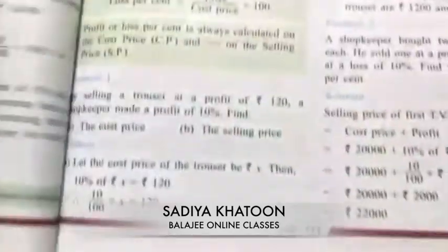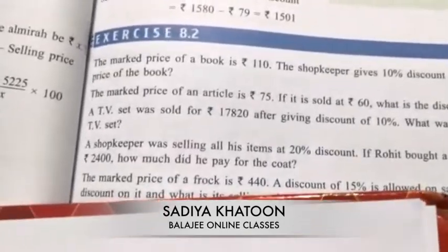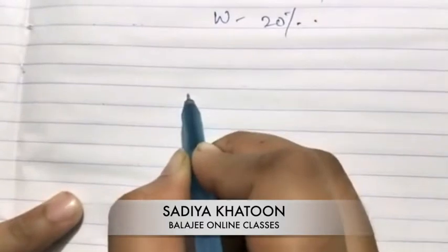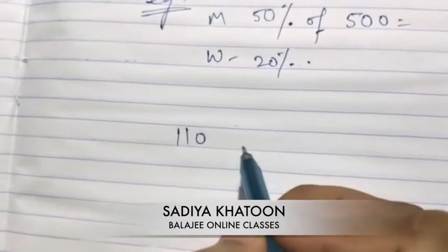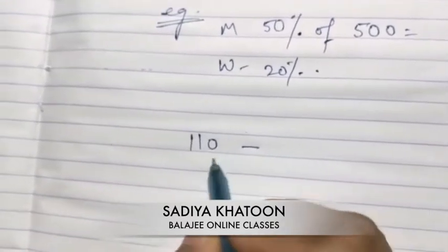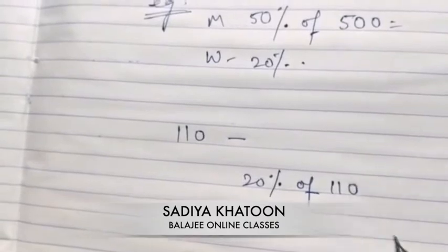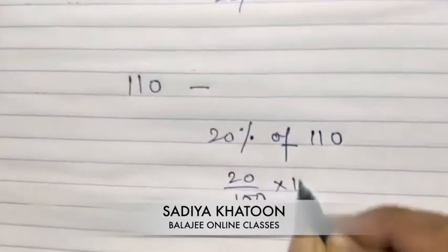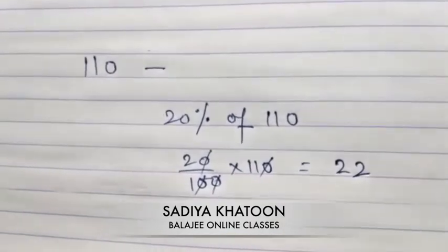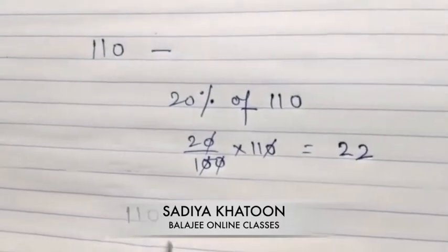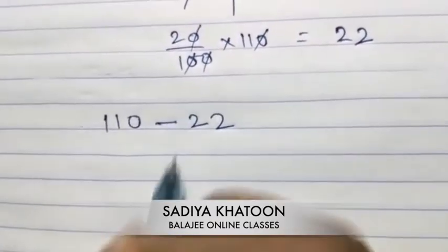The next exercise is based on discount, which is another application of percentages. Suppose the marked price is 110 rupees and the customer is given a 20 percent discount. To calculate, find 20 percent of 110 — that is 20 upon 100 into 110 — which equals 22 rupees. Then subtract 22 from the marked price. In discount cases, we always subtract from the marked price.